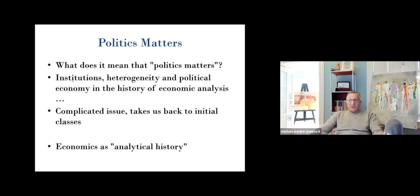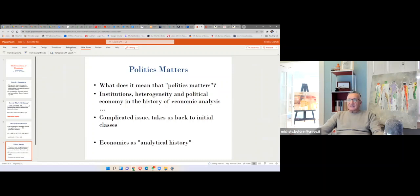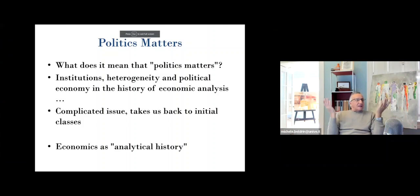That's all I'm saying. Sometimes when we write things like 'it's institutions,' we think we get the illusion of having found an answer, but then you think a little bit deeper and you say 'no, that's not an answer.' I'm just being confused, which is why the next bullet point says 'complicated issue,' which takes us back to the initial classes. And then it says 'economics as analytical history.'